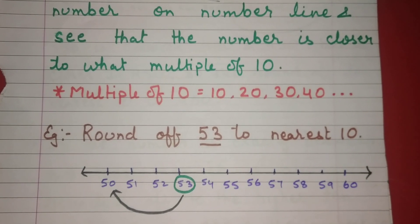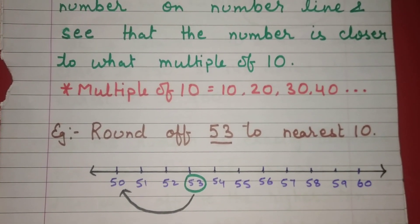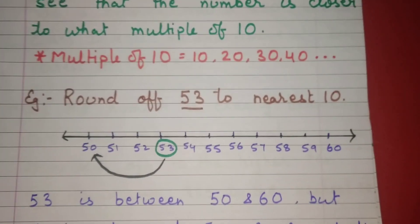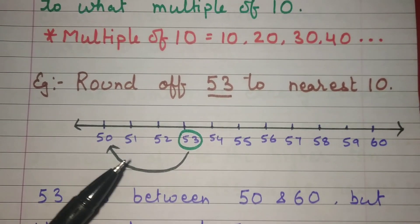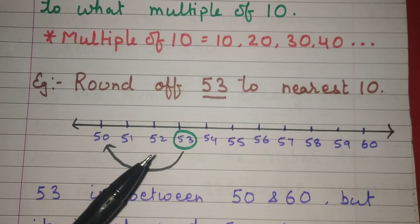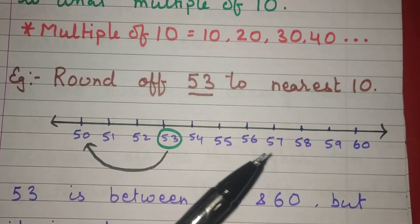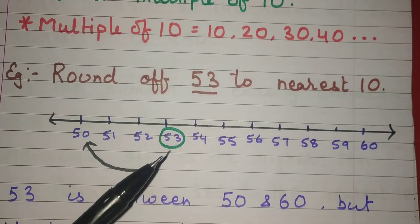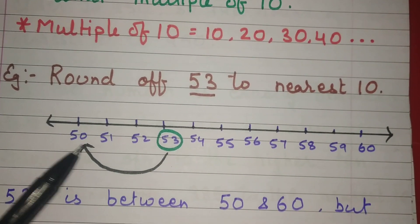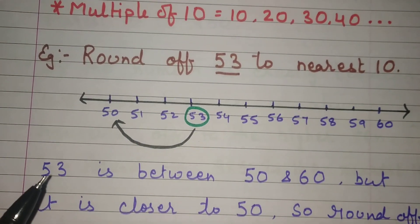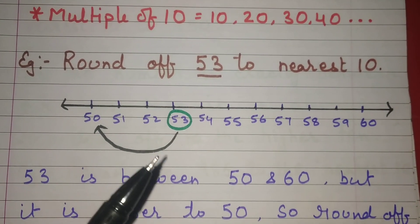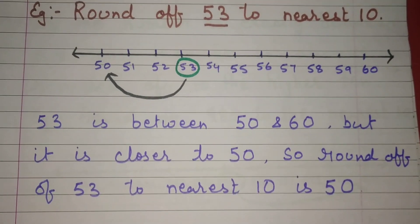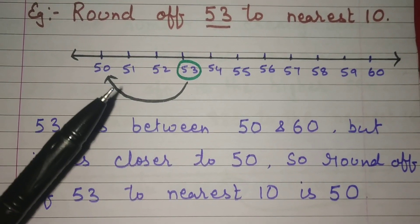Let's see with an example: round off 53 to nearest 10. When we put 53 on the number line starting from 50 — 51, 52, 53, 54, 55, 56, 57, 58, 59, 60 — 53 is between 50 and 60, but it is closer to 50. So the round off of 53 to nearest 10 is 50.